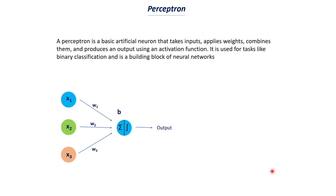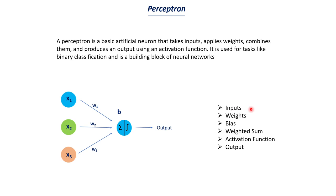Now let's understand perceptron in detail. A perceptron is a basic artificial neuron that takes inputs, applies weights, combines them, and produces an output using an activation function. It is used for tasks like binary classification and as a building block of neural networks. The factors involved are: inputs, weights, bias, weighted sum, activation function, and output.